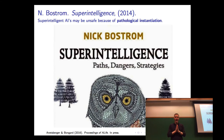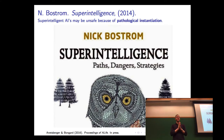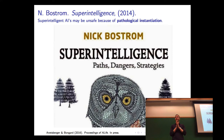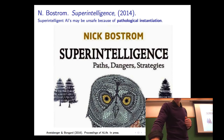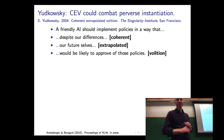I wanted to touch on this book. It got a lot of attention a few years back — it's written by a philosopher. Most of it addresses what would happen if we're able to build machines that are not just intelligent but superintelligent — more than human intelligence. However, a significant part is dedicated to perverse instantiation and how to resist it. There's a concept introduced called coherent extrapolated volition.